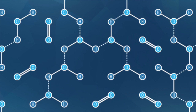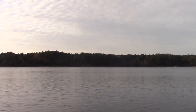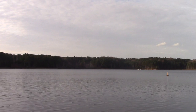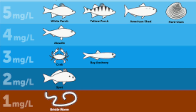Dissolved oxygen is the concentration of oxygen in water. This paper focuses on what dissolved oxygen levels tell us about the water quality in Falls Lake, and also focuses on the correlation between water temperature and dissolved oxygen levels. The higher the temperature, the lower the dissolved oxygen, which is harmful to marine life. The constant increase in temperature is also causing lower concentrations of dissolved oxygen.